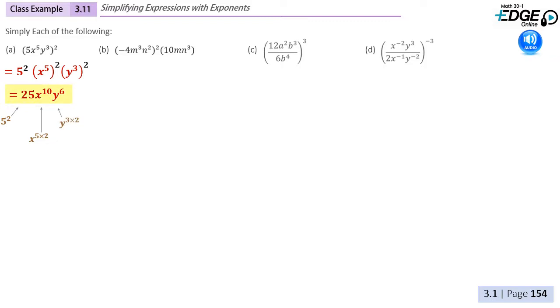In our first example, we're applying the power of a product rule. Generally, students do very well at multiplying the exponent on the x by 2 and the exponent on the y by 2, giving us x to the 10 and y to the 6. The most common error here is that in doing that, students also multiply the coefficient of 5 by 2 and write 10. That's an error. Here, the 5 has an invisible exponent of 1. That exponent is multiplied by 2, giving us the 5 squared, and that gives us a coefficient of 25.